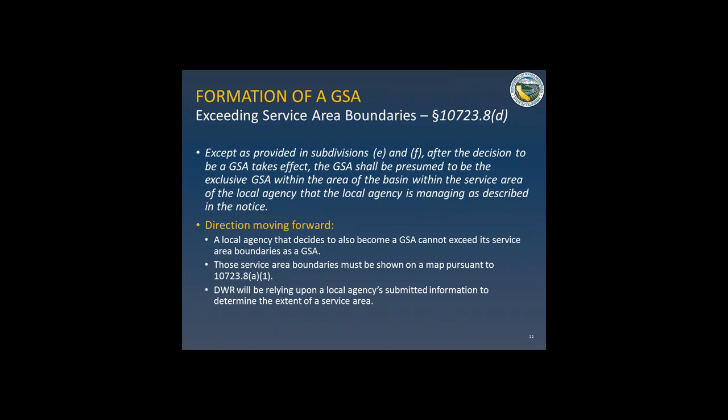Under the revised language of Water Code 10723.8D regarding service areas: after the decision to be a GSA takes effect, the GSA shall be presumed to be the exclusive GSA within the area of the basin within the service area of the local agency. If you're a local agency wanting to become a GSA, you cannot exceed your service area boundaries as that GSA — unless you have supporting legal documentation. You have to show those service area boundaries on the map, and the department is going to rely upon the local agency's submitted information to determine the extent of the service area.